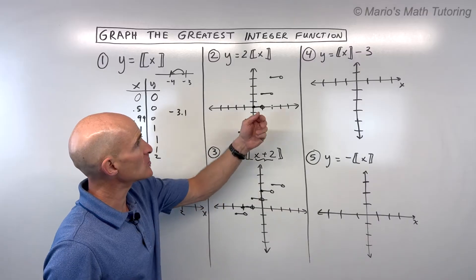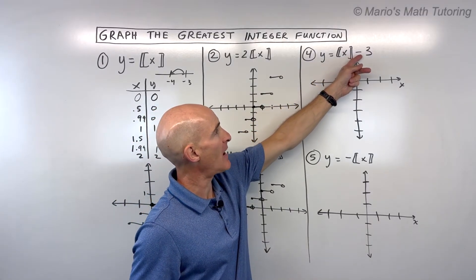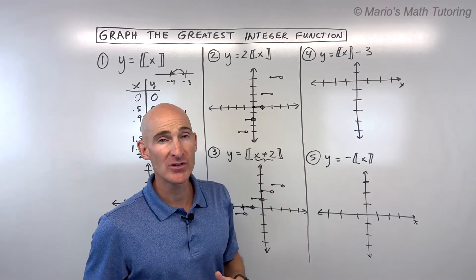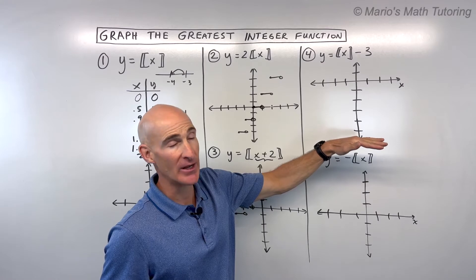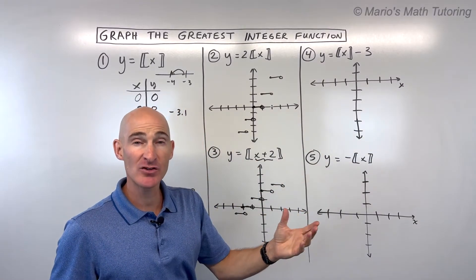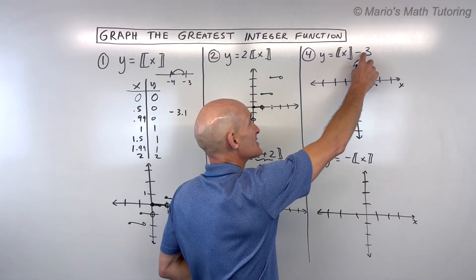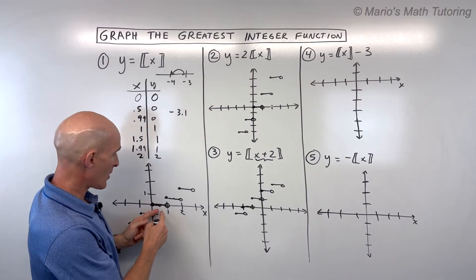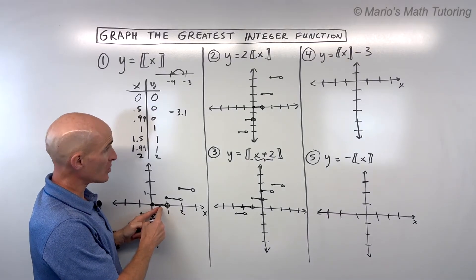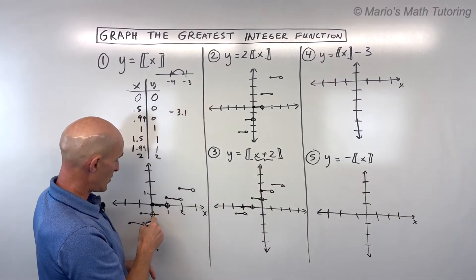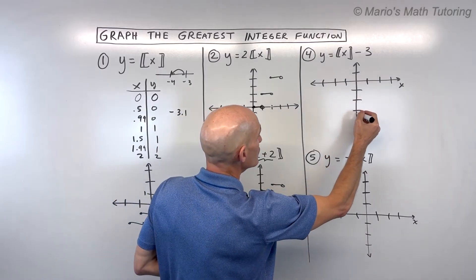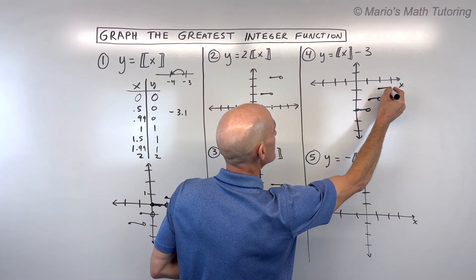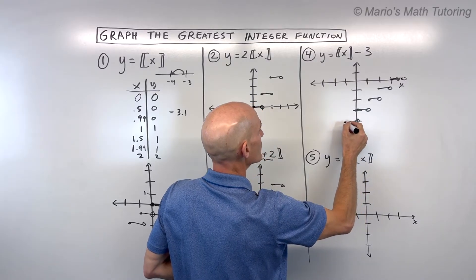For number 4, y equals the greatest integer of x, minus 3. The minus 3 is not grouped with the x, so it affects the y values with the same effect — it shifts everything down 3. If it's grouped with x, it affects x with the opposite effect; if it's not grouped with x, it has the same effect on the y coordinates. So referring back to our parent function, each step shifts down 3, and you can continue in both directions.